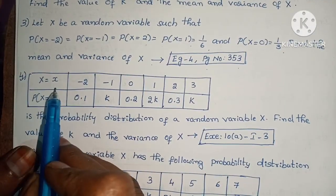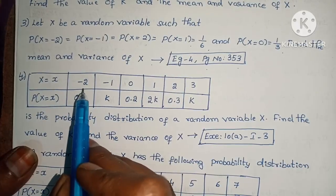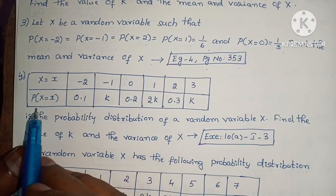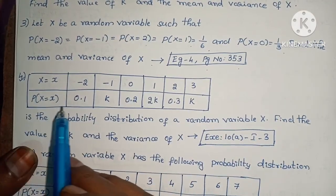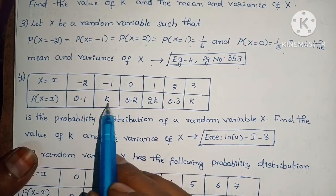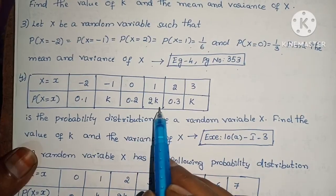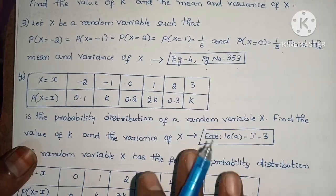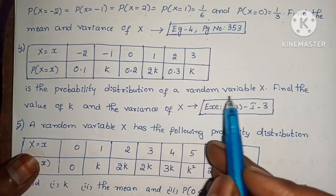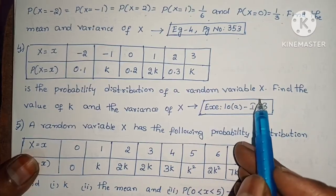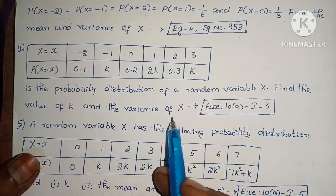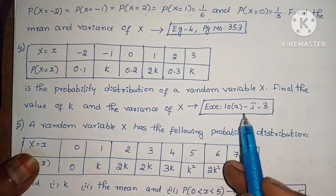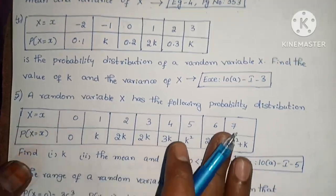x takes values −2, −1, 0, 1, 2, 3, with P(x) = 0.1, k, 0.2, 2k, 0.3, k respectively. Is this the probability distribution of a random variable x? Find the value of k and the variance of x. Exercise 10, Section I, problem 1.